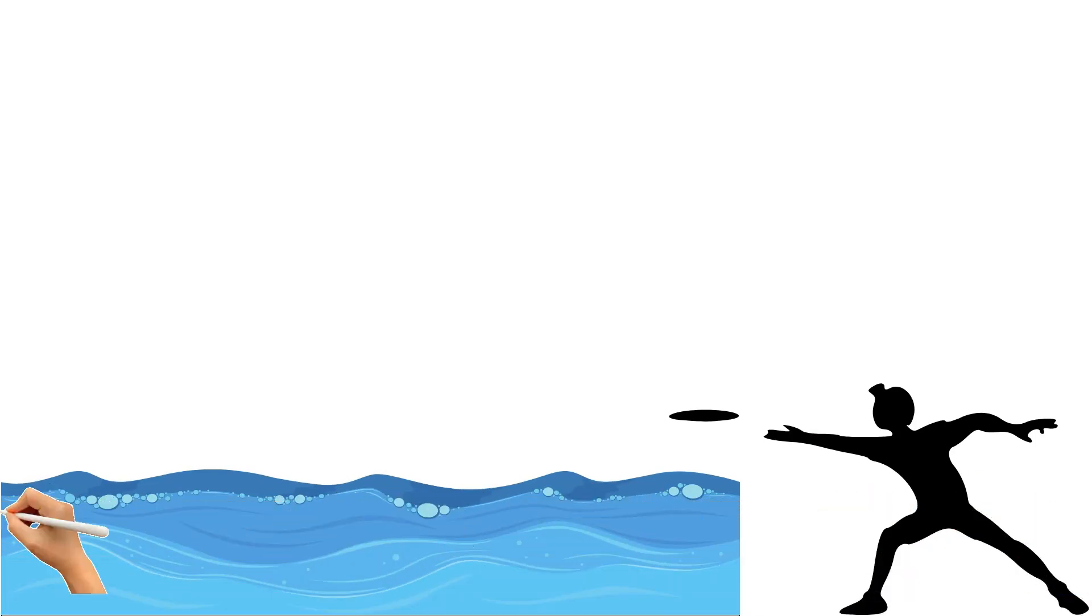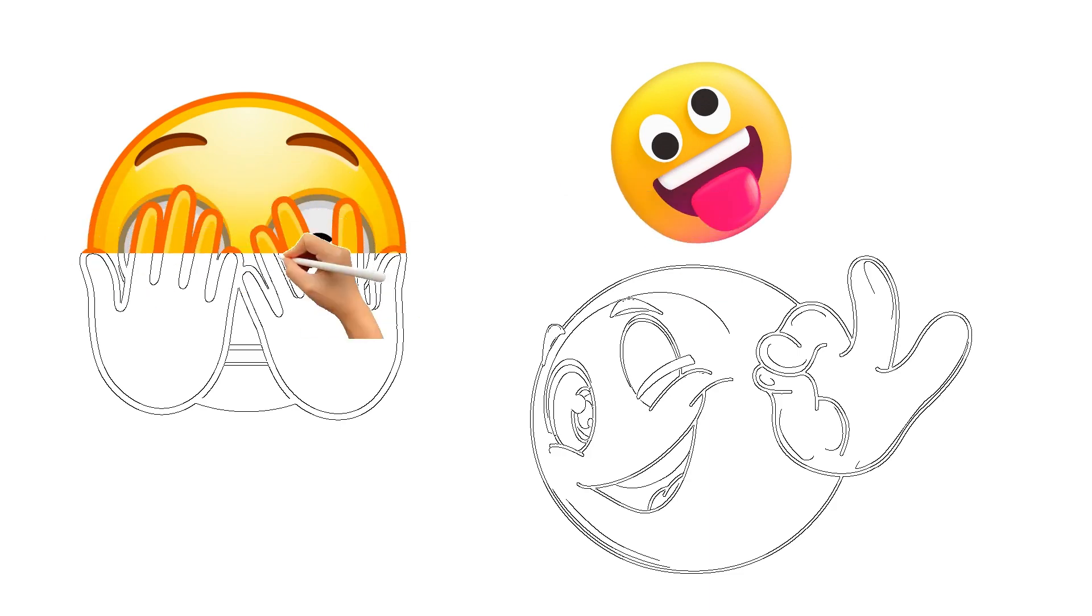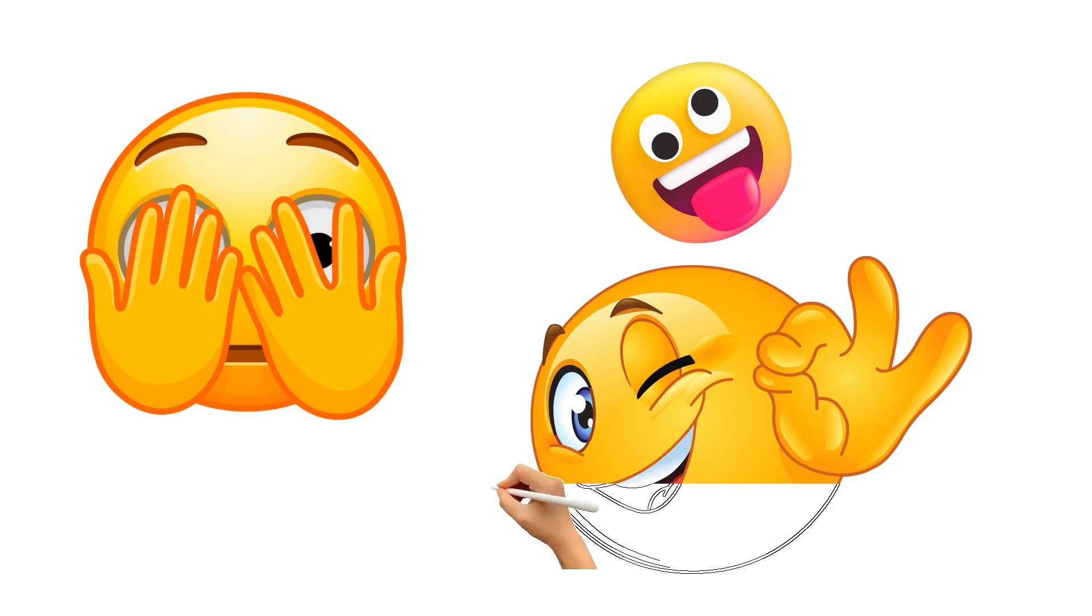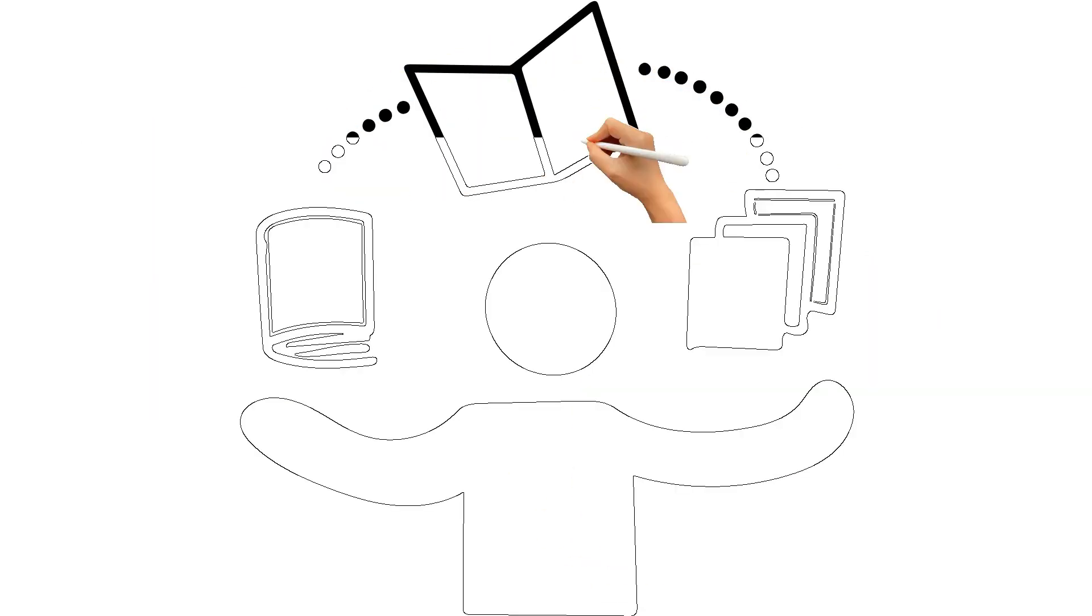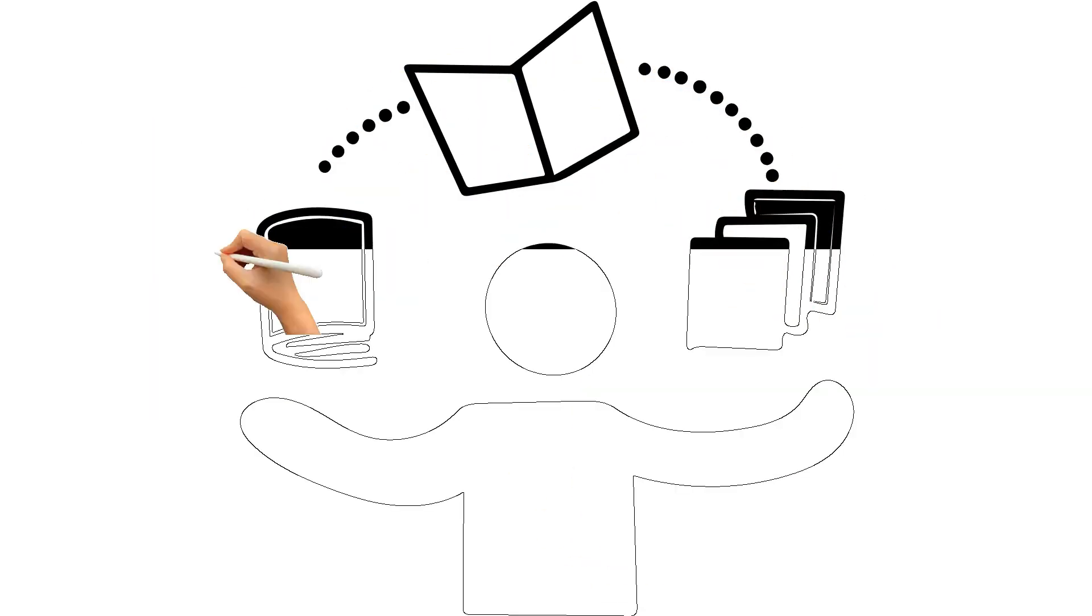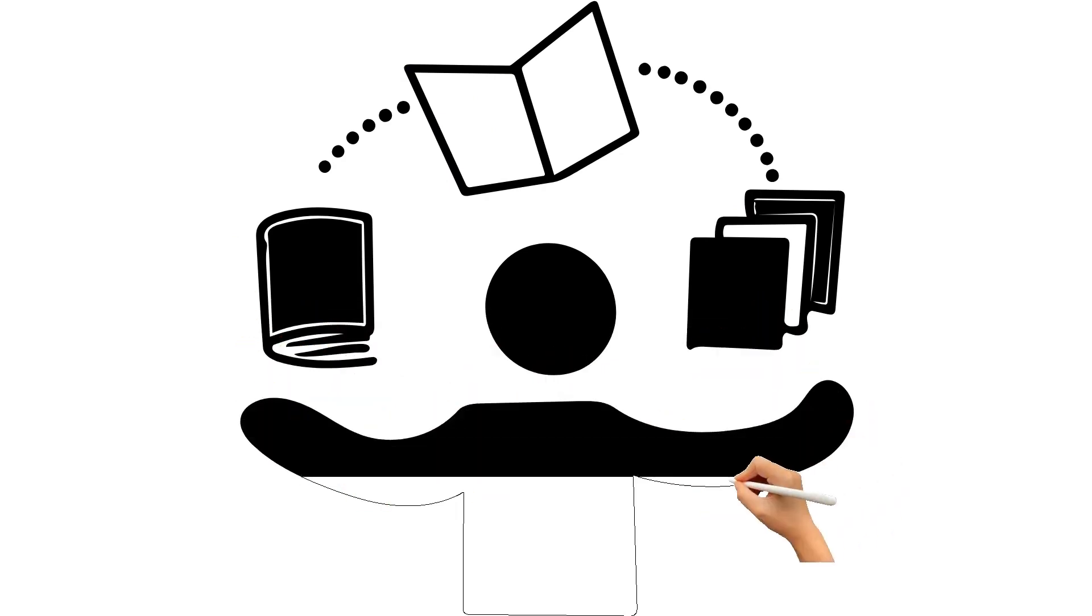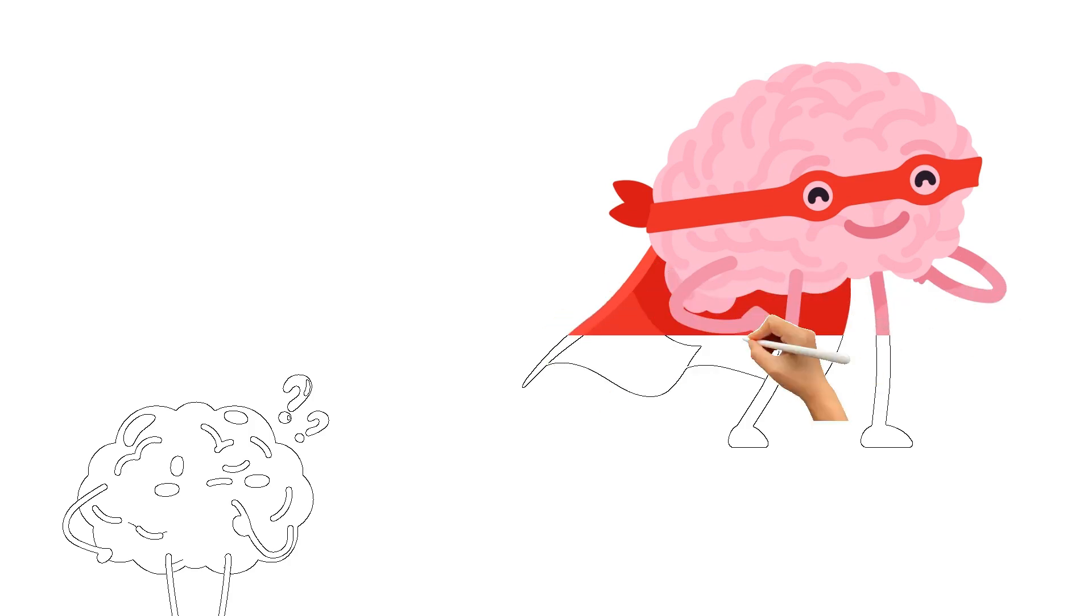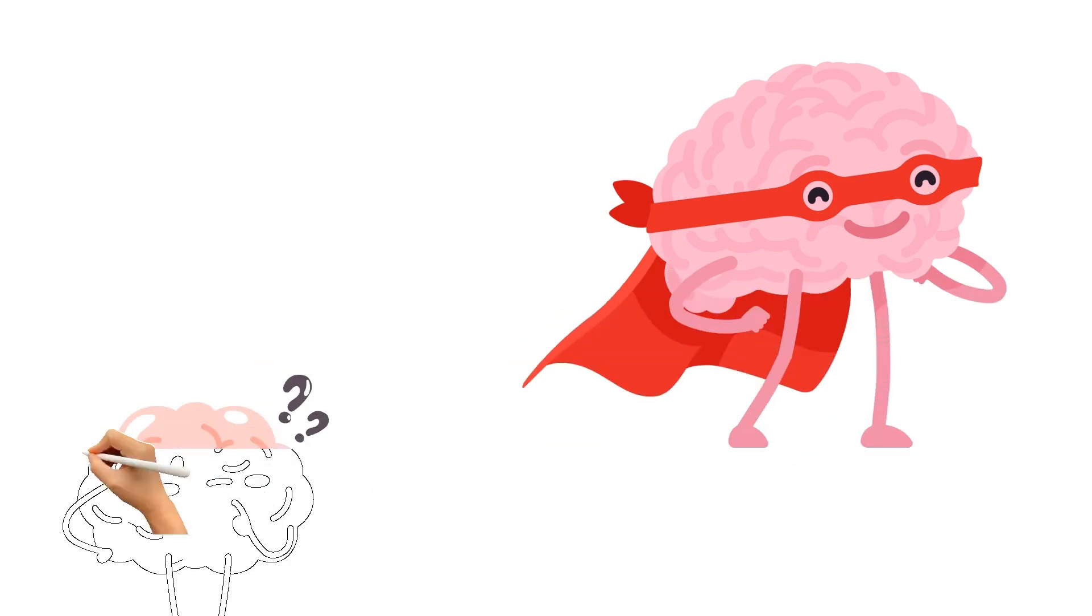So what's the solution to this cerebral meltdown? Cold turkey? Throwing our devices into the sea? Living in a cave? Tempting, but probably not practical. Instead, we need to start treating our brains like the precious organs they are. Just as we, hopefully, wouldn't subsist on a diet of pure junk food, we need to start feeding our minds a more balanced diet. Here's a radical idea.